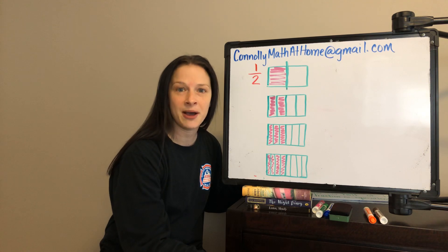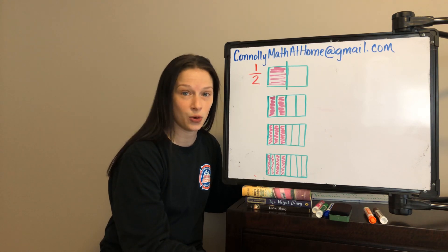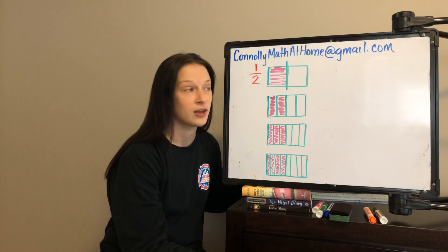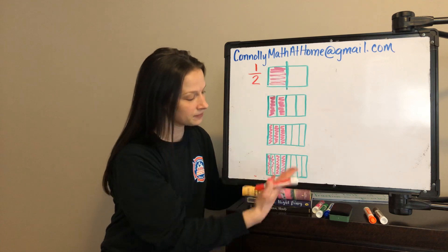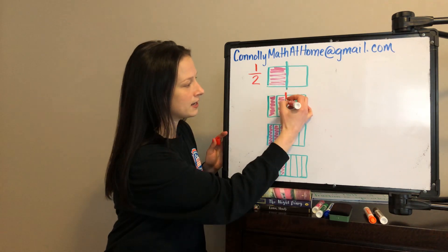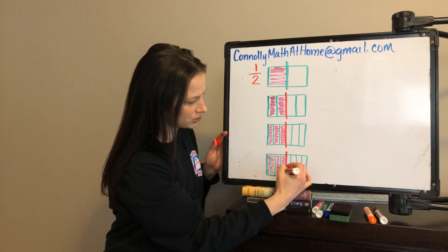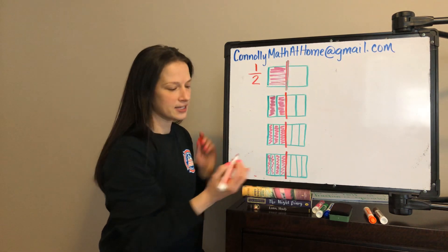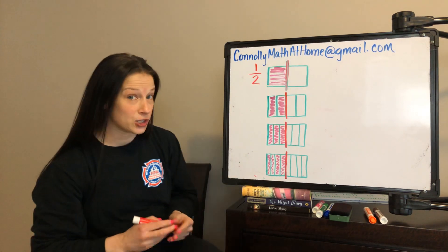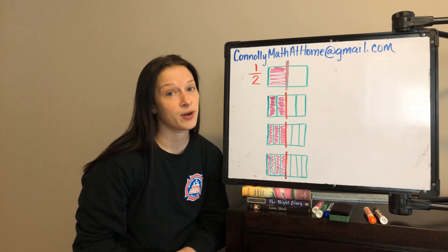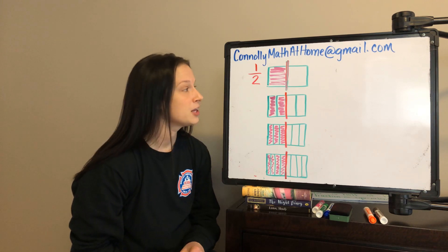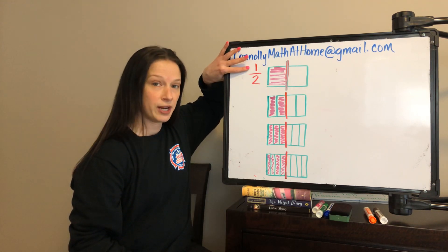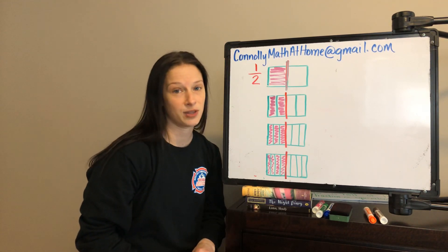Today we're going to be talking about comparing to 1 half. First we need to understand what makes a fraction equivalent to 1 half. I've drawn several representations, all equivalent to 1 half. I want us to come up with a conjecture for what we know is true about when a fraction is equivalent to 1 half. Think about the relationship between the numerator and the denominator and how we know that it's 1 half.